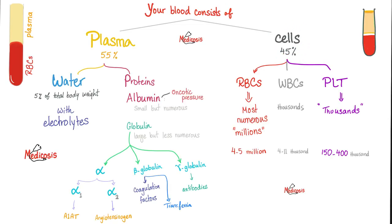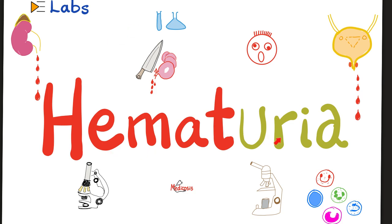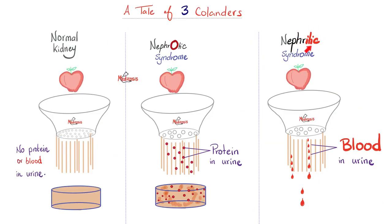Normal urine should not have red or white blood cells in significant amounts. If there are many red blood cells in the urine and the problem is in the tubule, we can see red blood cell casts. If the problem is in the bladder, no casts appear. In nephritic syndrome, the kidney is inflamed and shedding tears of blood, so we will see red blood cell casts and red blood cells in the urine.